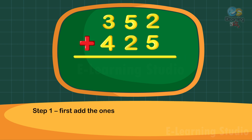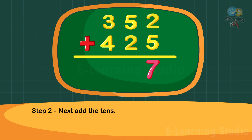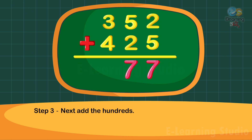Step 1: First add the ones. 2 plus 5 is equal to 7. 7 under ones column. Step 2: Next add the tens. 5 plus 2 is equal to 7. 7 under tens column.